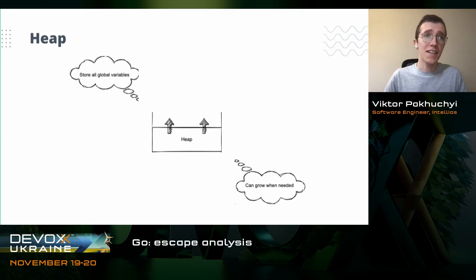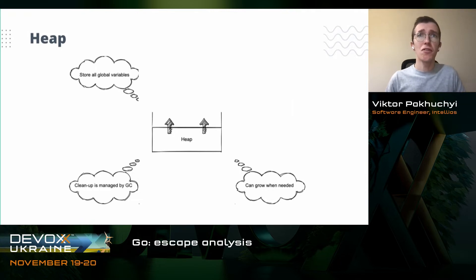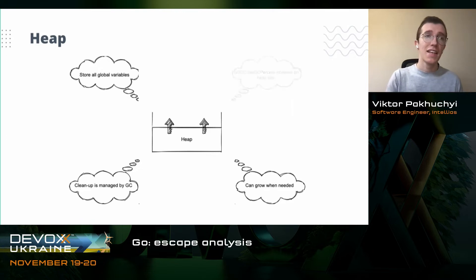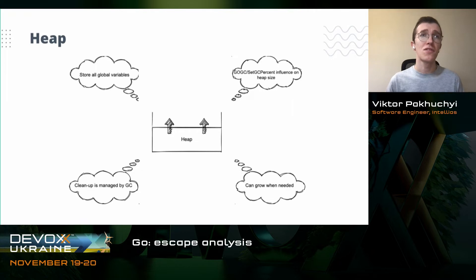In our case, the maximum size of the heap can be even more than the maximum amount of RAM we have, thanks to virtual memory. The unfortunate thing is that the heap is not automatically cleaned up — for that operation we need our garbage collector, which always requires some resources. The only option to configure our garbage collector is to set the GOGC or setGCPercent variable, which tells us when the garbage collector should be executed.